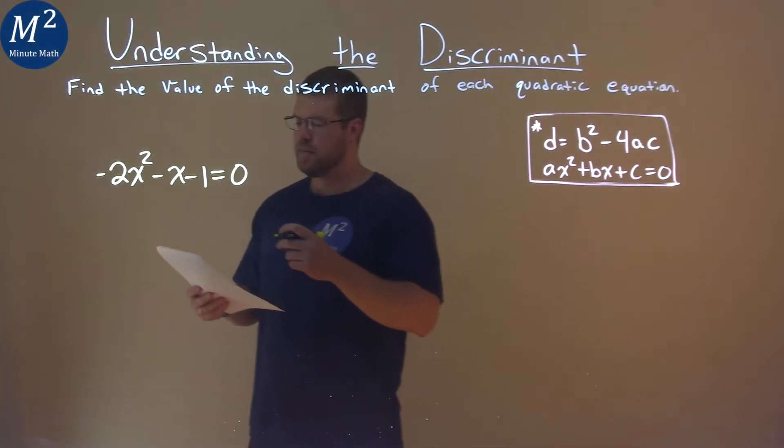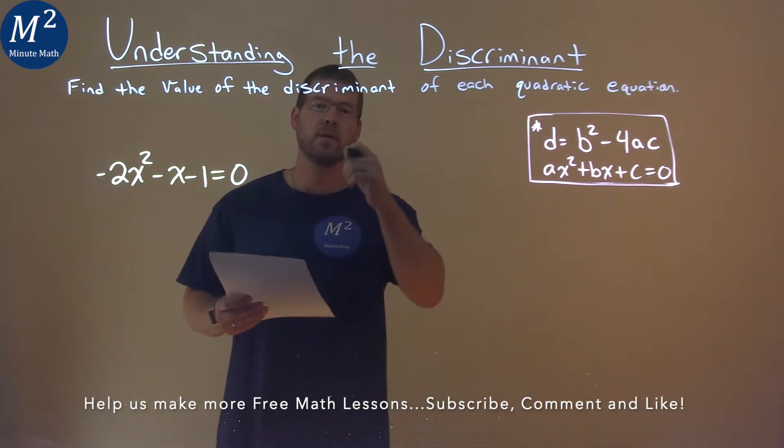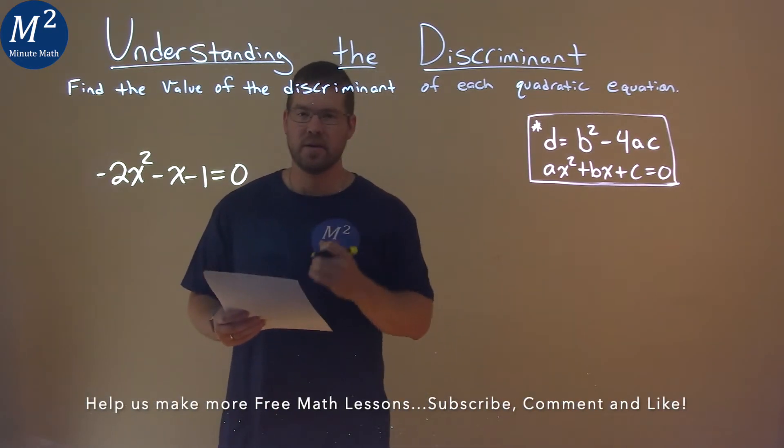We're given this problem right here. Negative 2x squared minus x minus 1 equals 0, and we need to find the discriminant.